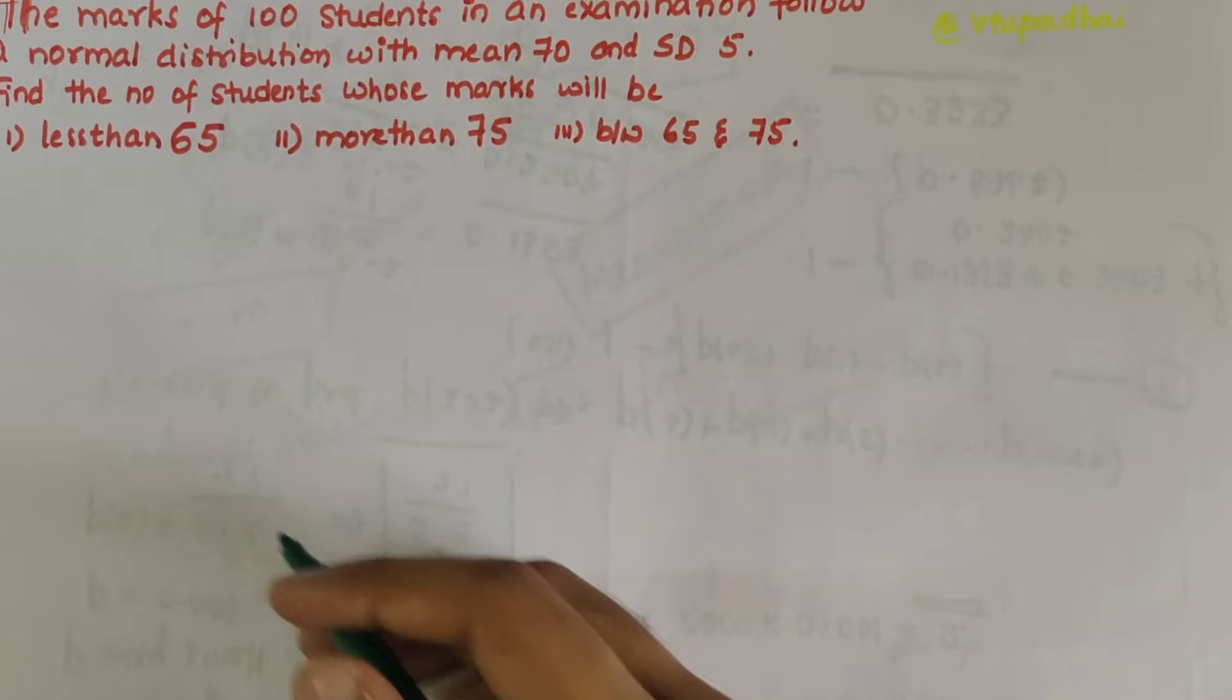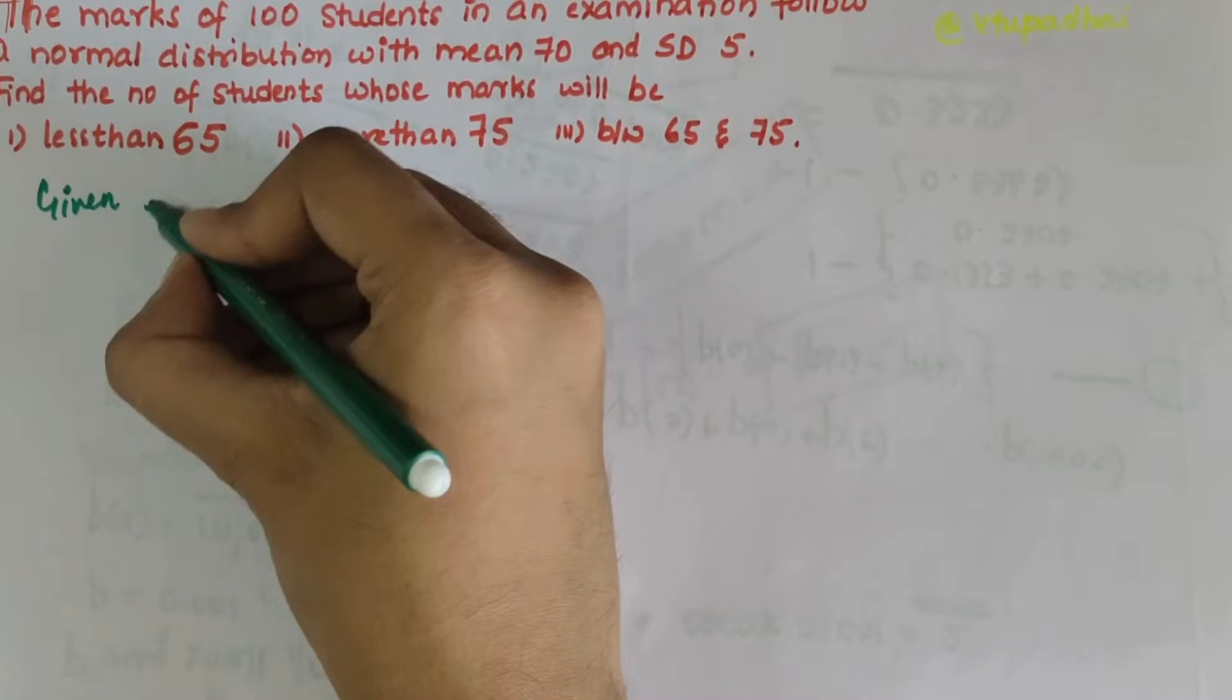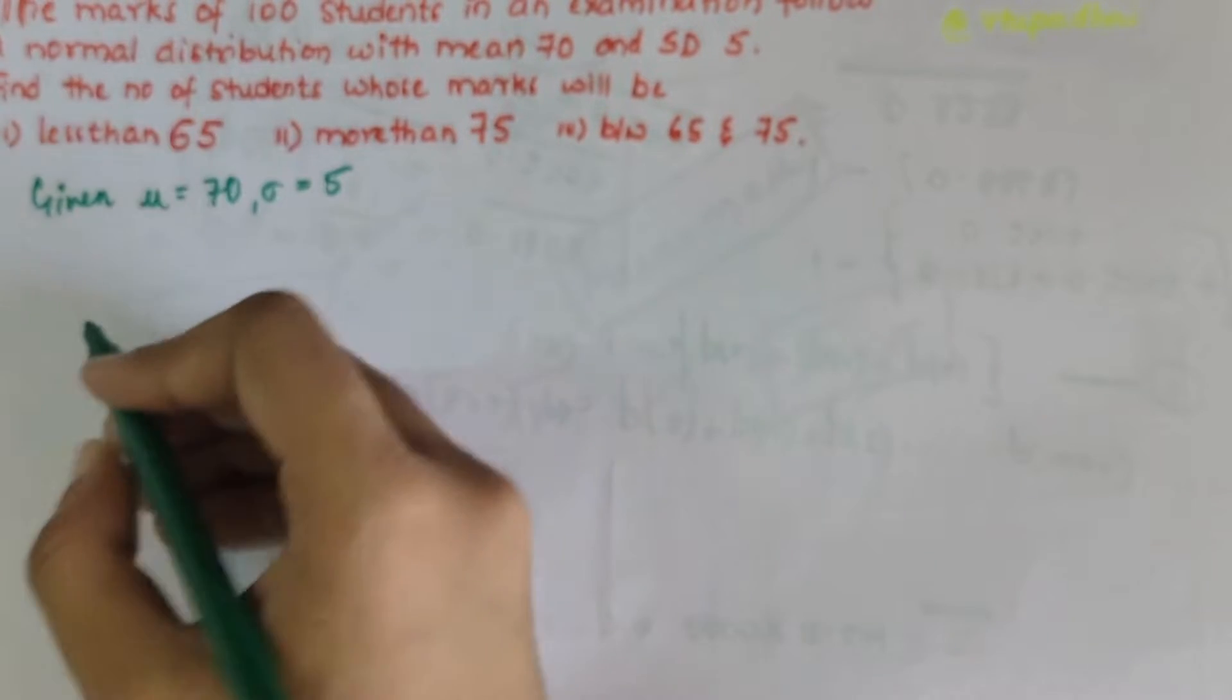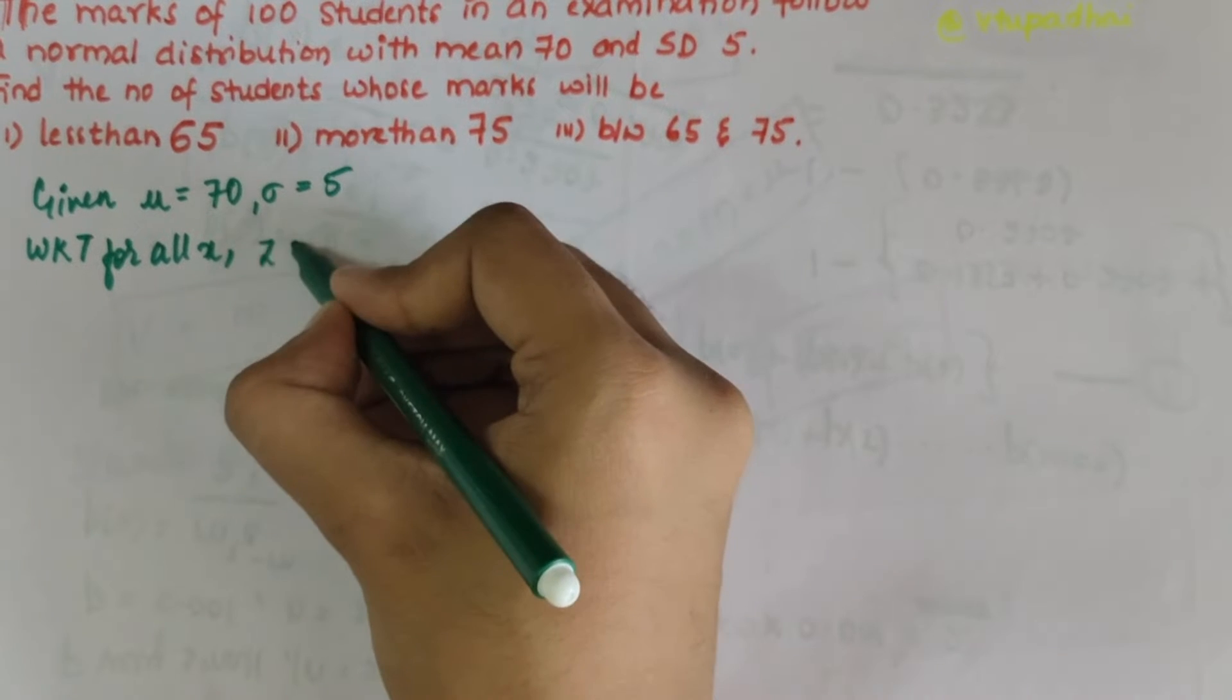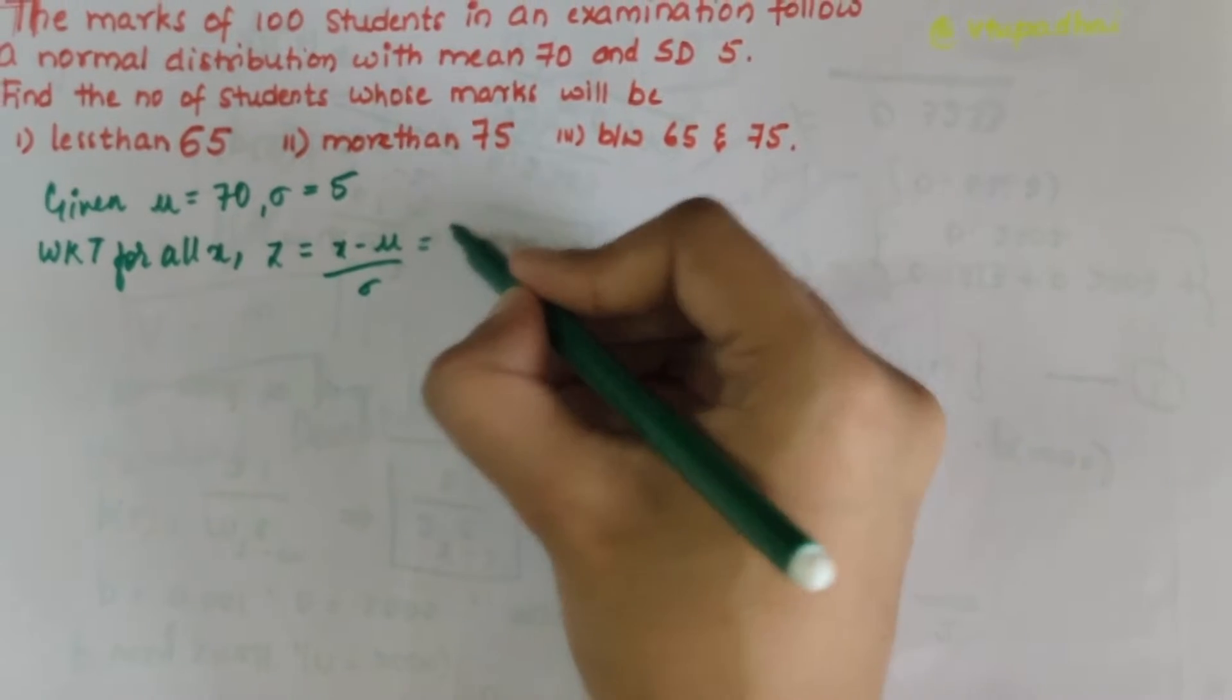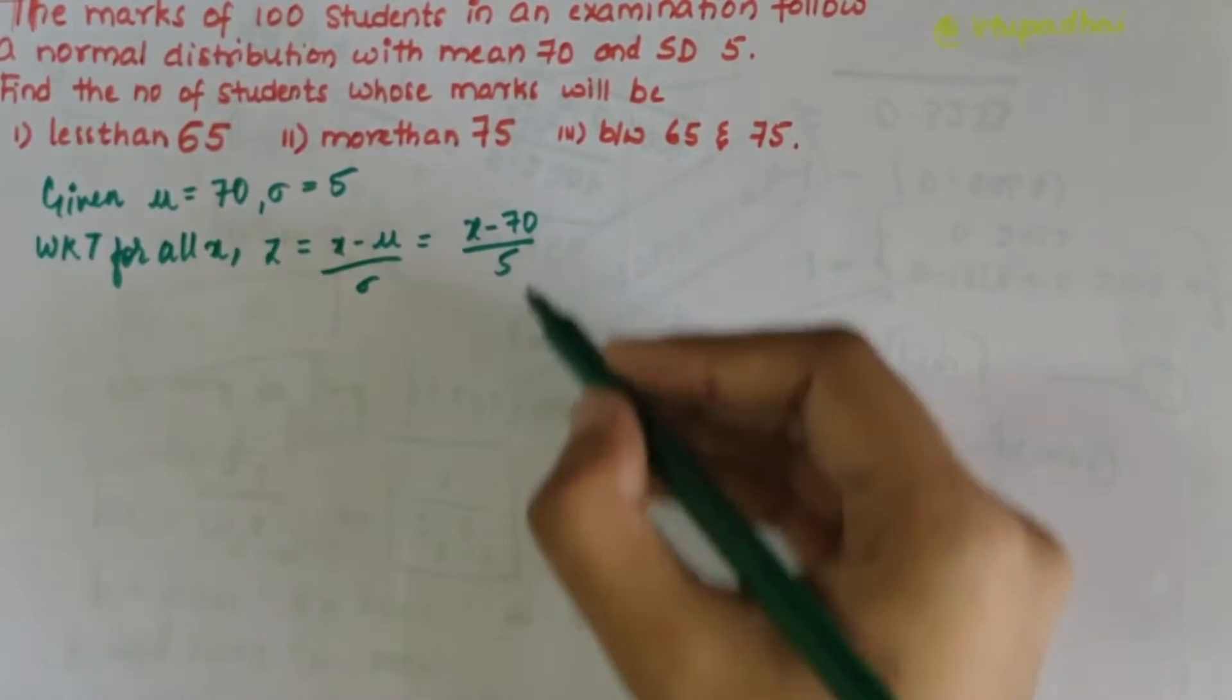First, let's start with the given data. Mean μ is 70 and standard deviation σ is 5. We know that for all x, the standard normal variate z equals (x - μ) / σ, that is z = (x - 70) / 5.